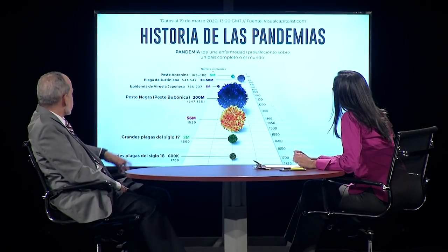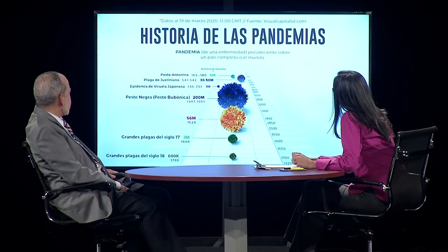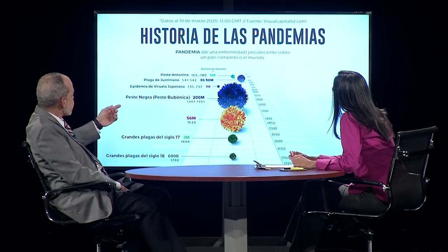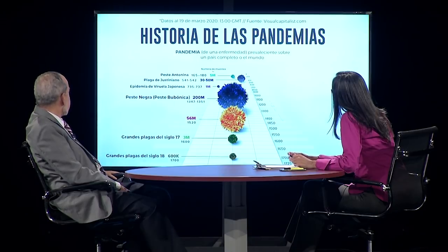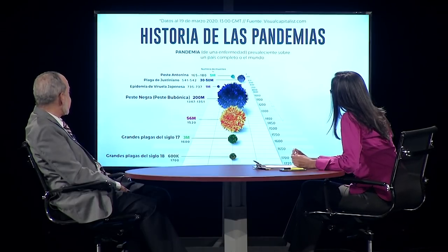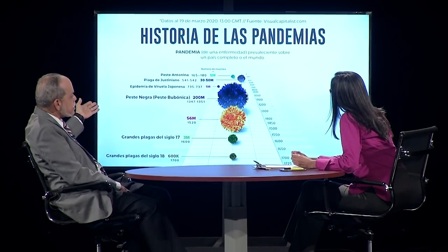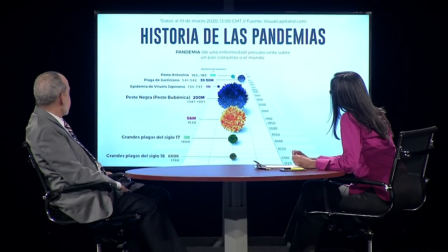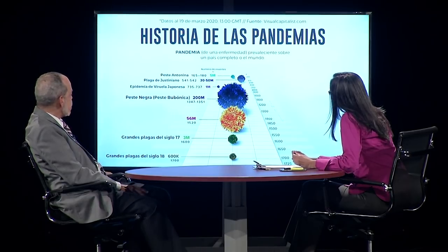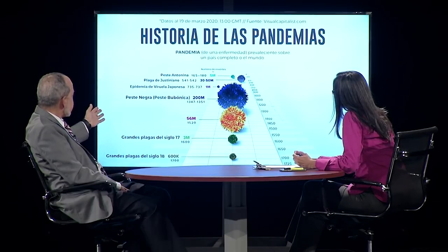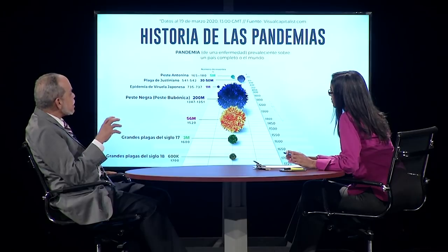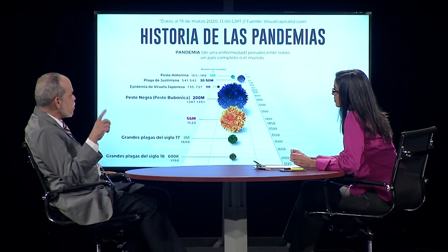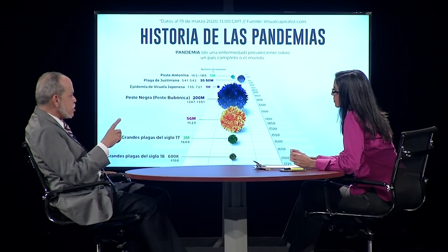Comenzando desde el siglo II, la llamada Peste Antonina, en un momento en que el mundo no tenía tantos millones de habitantes, se llevó 5 millones de personas. La plaga de Justiniano, año 541-542, de 30 a 50 millones de personas murieron. La famosa viruela japonesa, un millón de personas. Y luego llegamos a la peste bubónica, la peste negra, de 1347 a 1351, en cuatro años aproximadamente 200 millones de personas murieron a nivel mundial.